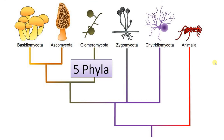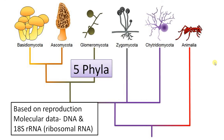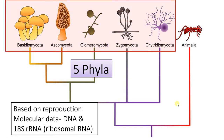This classification into five phyla is based on mode of reproduction and also molecular data — that is, DNA sequencing data of different groups of fungi, and also 18S rRNA data, which is the most common molecular marker used for classification.